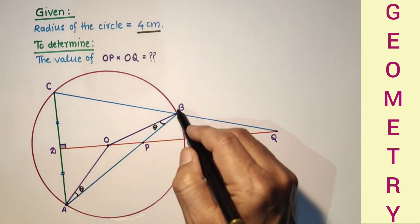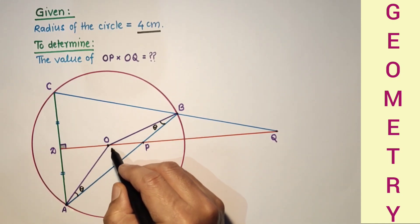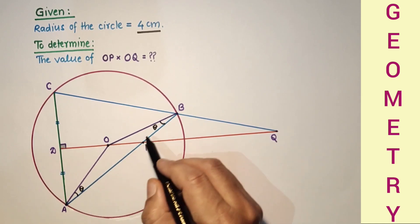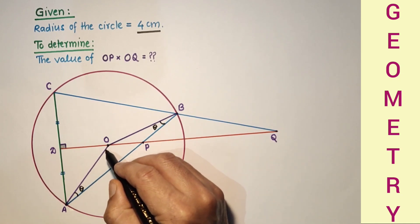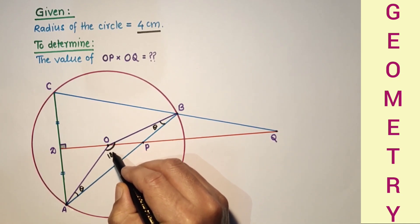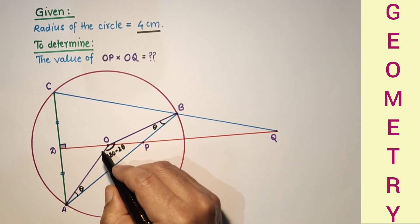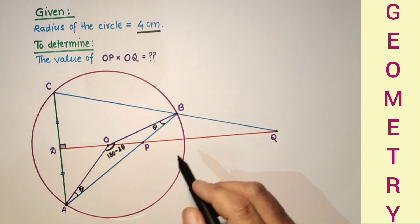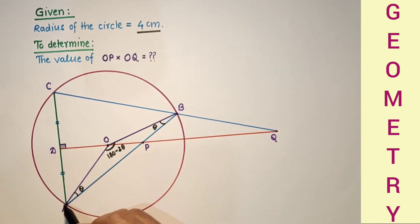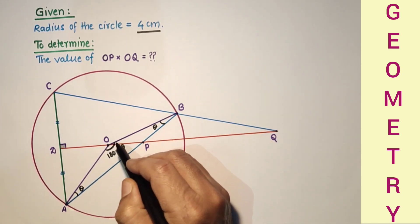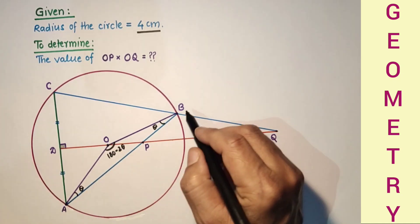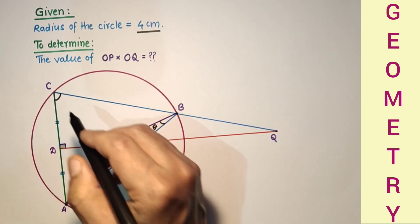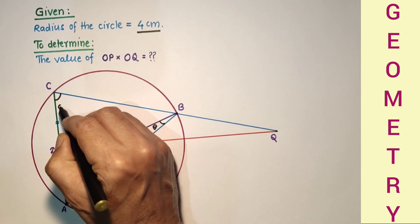Arc AB subtends an angle at the center of the circle. That central angle is the sum of the two base angles subtracted from 180, so the central angle is 180 minus 2 theta. The same chord AB will subtend half of this central angle as an inscribed angle, so that inscribed angle is equal to 90 minus theta.